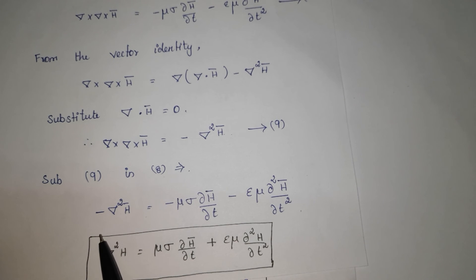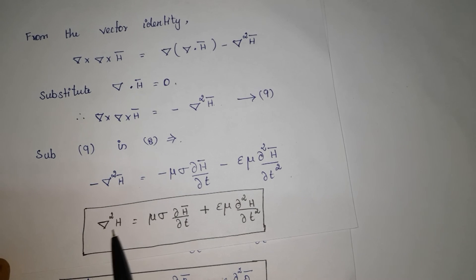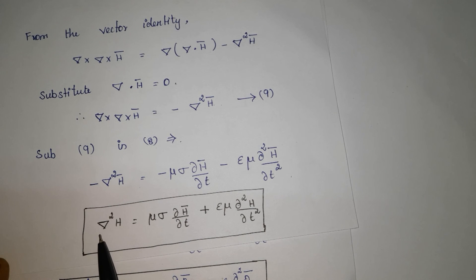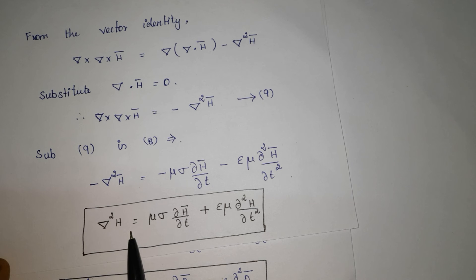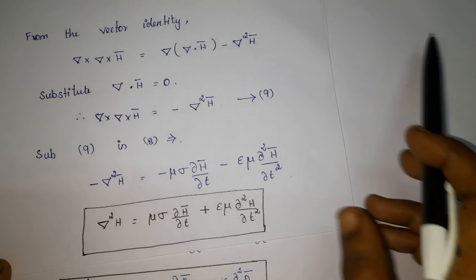Applying the vector identity: del cross del cross H vector is equal to del of del dot H vector minus del squared H vector. Since divergence of any vector is equal to 0, del dot H equals 0. Substituting this into the equation, we get minus del squared H vector is equal to minus mu sigma partial H by partial T minus epsilon mu partial squared H vector by partial T squared. Multiplying by minus on both sides gives the wave equation for magnetic field H.